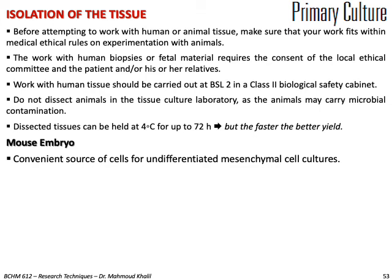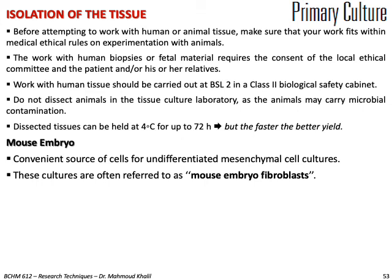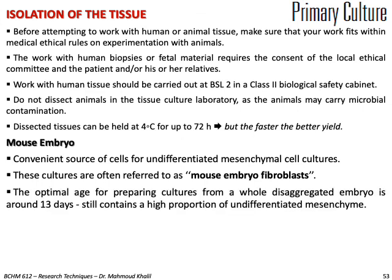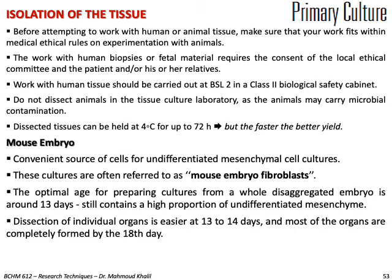For mouse embryos, they are a convenient source of cells for undifferentiated mesenchymal cell cultures, often termed mouse embryo cultures. The optimal age is 13 days — at this stage the embryo still contains a high proportion of undifferentiated mesenchyme. Dissection of individual organs is easier at 13 to 14 days, and most organs are completely formed by the 18th day.